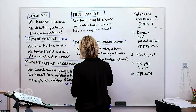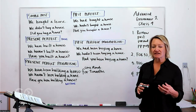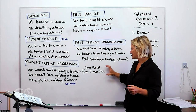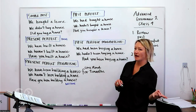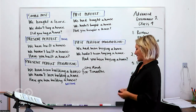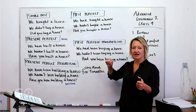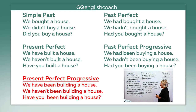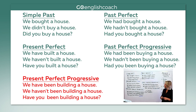We talked about 'for' and 'since' in our previous class, so if time clauses are confusing, go ahead and watch the last class. So 'We have been building a house for two months' means it is not done — we are still building now. 'We haven't been building a house' — the negative. 'Have you been building a house?' — the question.